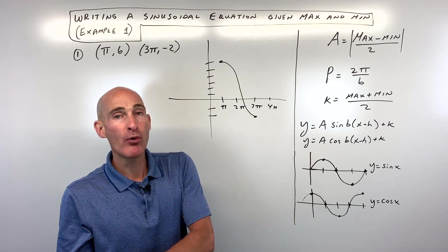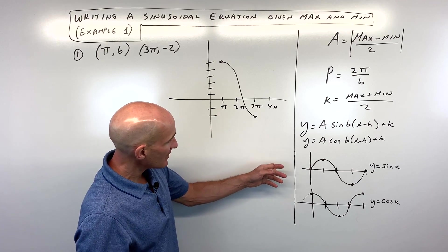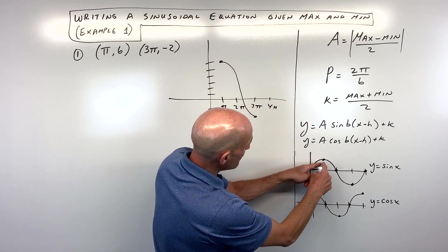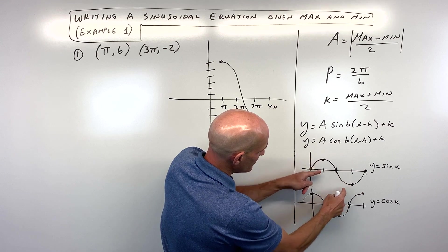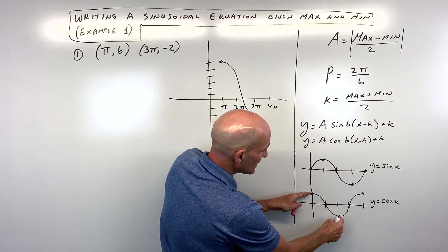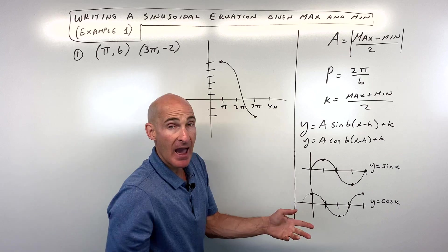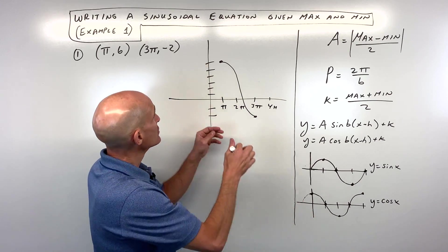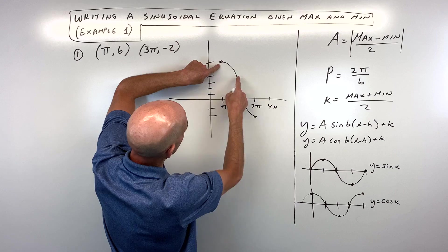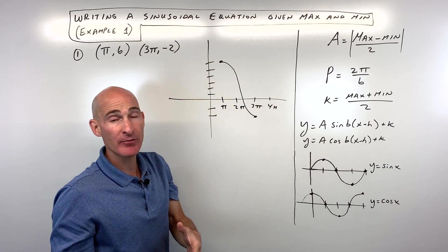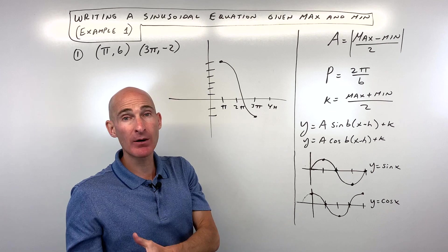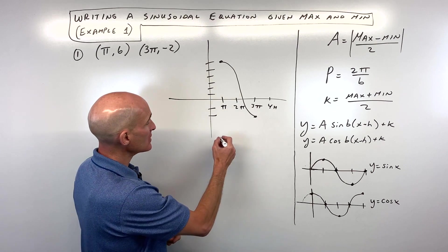Now what I want to point out here is that these graphs repeat — sine and cosine repeat — but from the maximum to the minimum, you see how that's only half of one period. So to go from pi to 3pi, that's only half the period, which is really a distance of 2pi. If we double that, our period is 4pi.